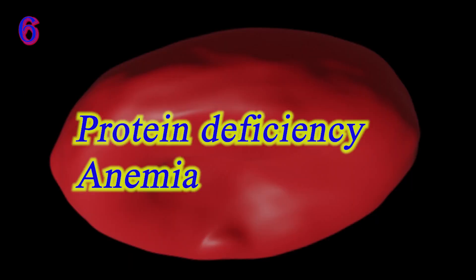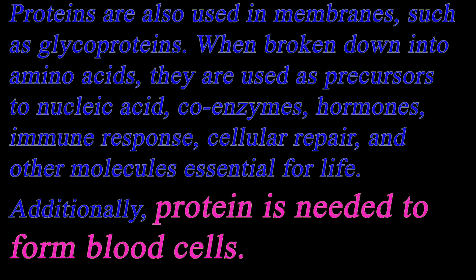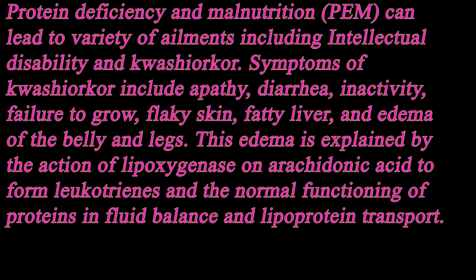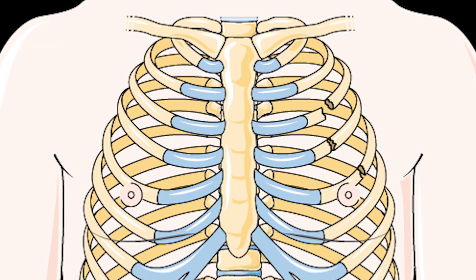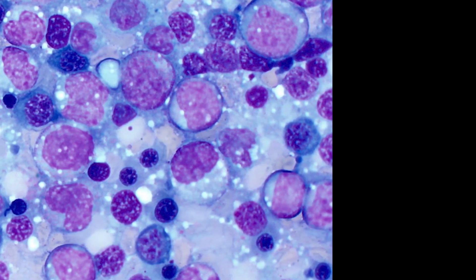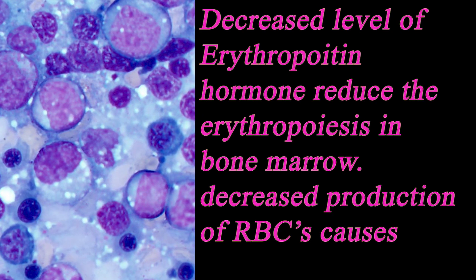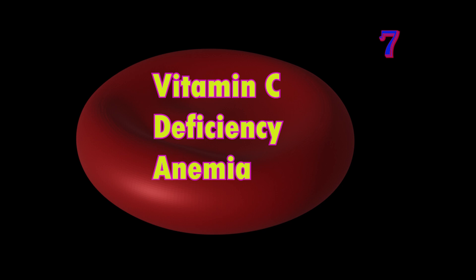Protein deficiency anemia: decreased dietary intake of protein may lead to mild to moderate anemia. This type of anemia is seen in vegans, vegetarians, elderly, and endurance athletes. Also called hypoproliferative anemia, it may develop in people with chronic liver disease, chronic kidney disease, and low thyroid function. Low protein intake slows body metabolism, reduces oxygen demand, decreases erythropoietin production from the kidneys, and causes decreased erythropoiesis.